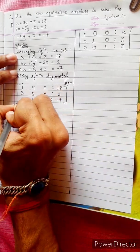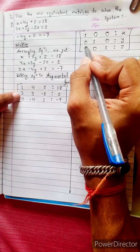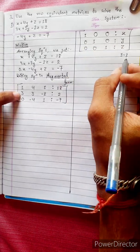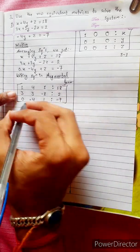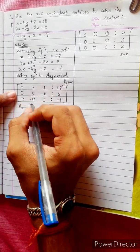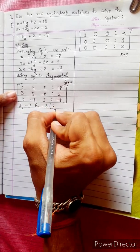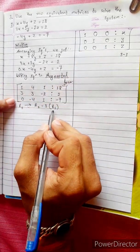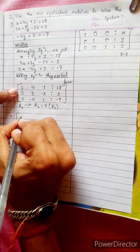Now I will do this. I will change the second row. R2 changes into R2 minus 3 times R1. I will use R1 on the same side.